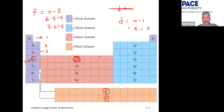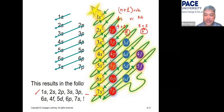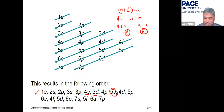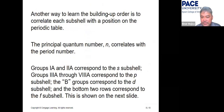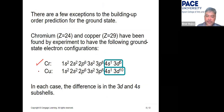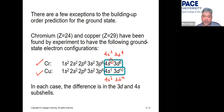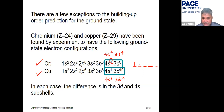Write the orbital with the highest energy level first, then work backward and fill up everything. The exceptions are chromium and copper: instead of 4s² 3d⁴ and 4s² 3d⁹, one electron from the s orbital moves to the d orbital because a half-filled or fully filled d orbital is more stable.